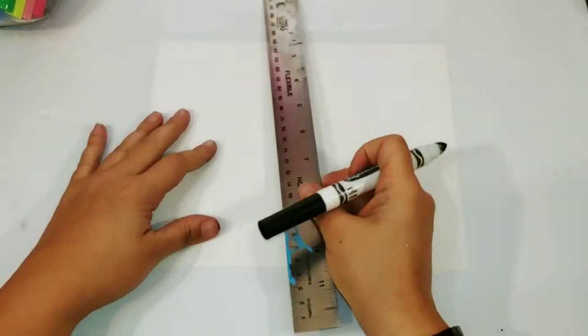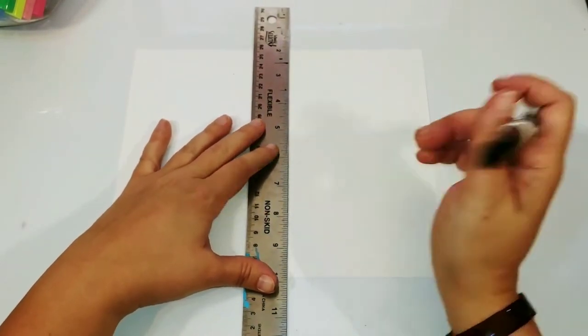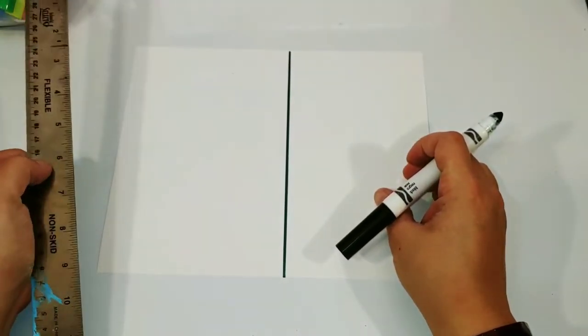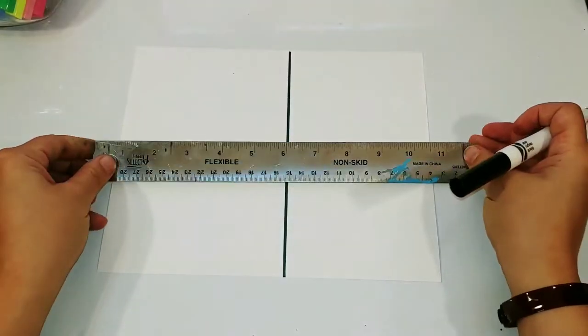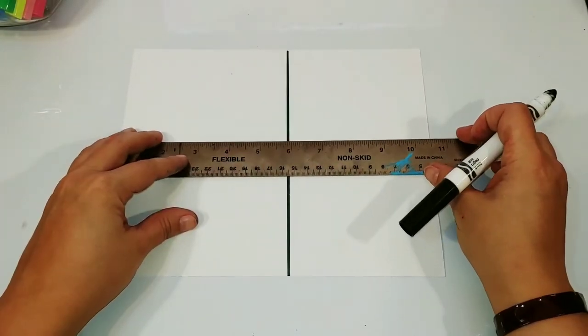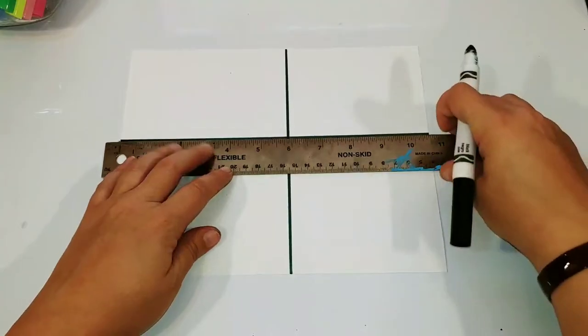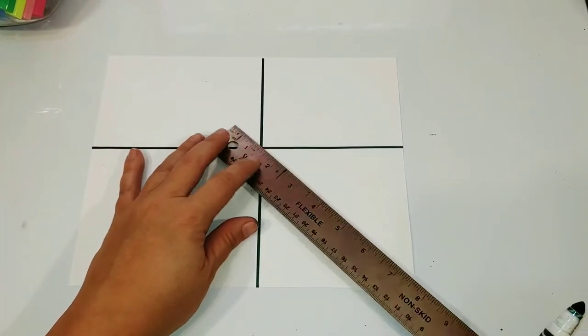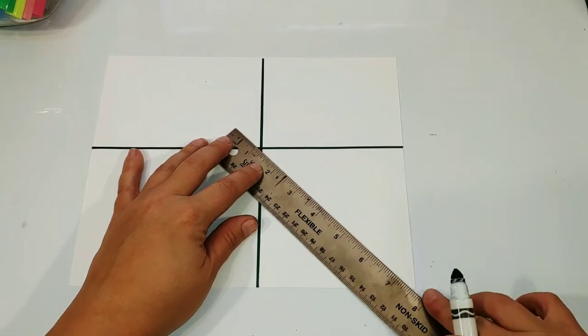So let's start with our paper, our ruler, and our marker. We're going to first divide the paper into four. This can be even or not, you just want to make sure the lines are straight up and down and straight across. I'm placing them kind of toward the middle so we're making a cross on the paper.